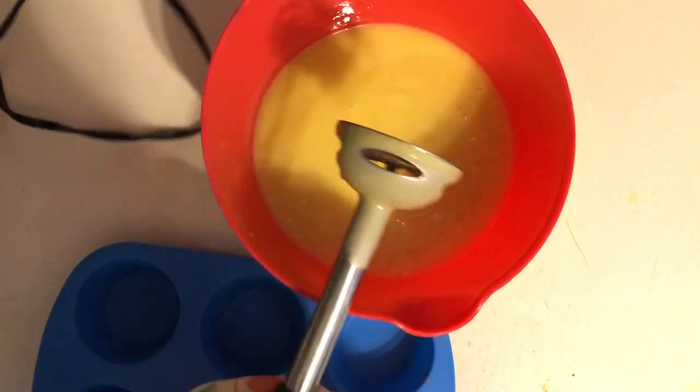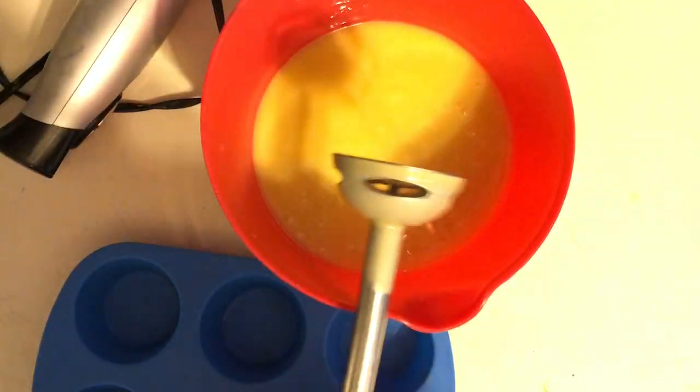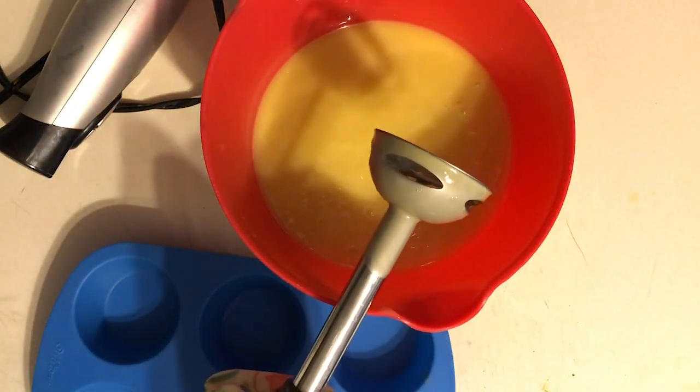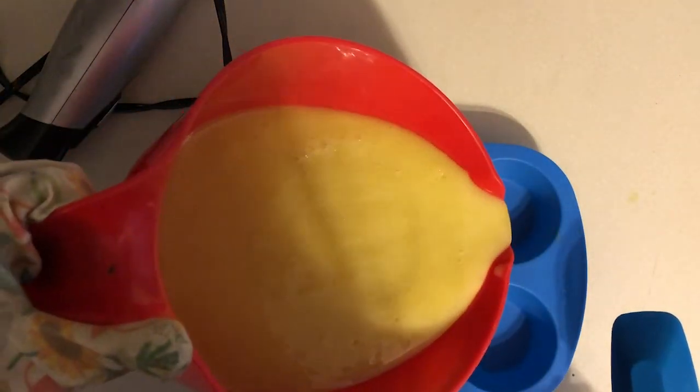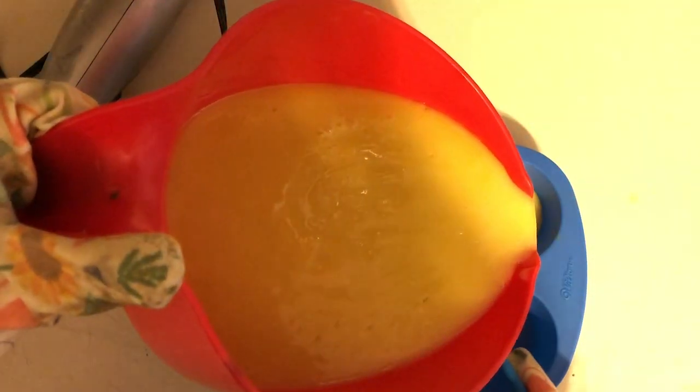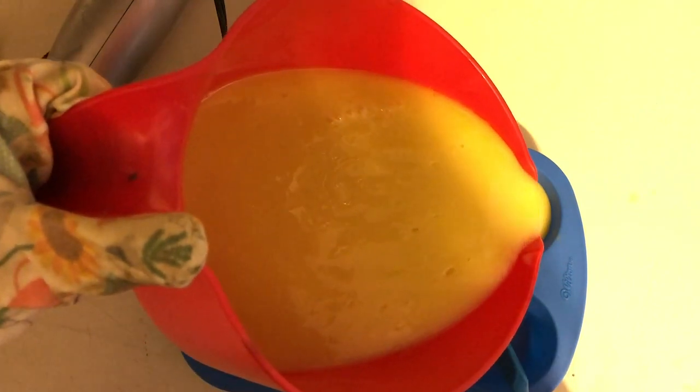Once everything is mixed up, you can pour it into your soap mold. I decided to use a silicone mold. For this recipe, I had a lot extra so I put it into other molds, but you could probably use two of these little cupcake-type molds.